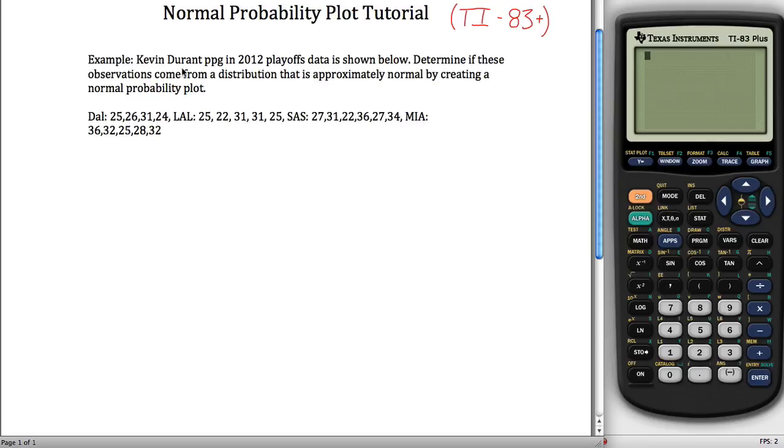In this example, I went back and looked at the points per game that Kevin Durant scored in the 2012 playoffs and recorded them all here. Against the Mavericks he had 25, then 26, then 31, then 24. I have all these observations and what I want to do is create a normal probability plot and then draw a conclusion.